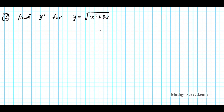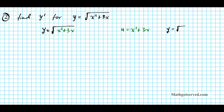So for this function, let's identify u first and then we are going to find y prime using two methods. y is equal to the square root of x squared plus 3x. Can you identify what u is here — the inner function and the outer function? The quadratic function x squared plus 3x is your input function, and the radical function is your parent function. So u is equal to x squared plus 3x, because that is the inner function, and y equals the square root of u.